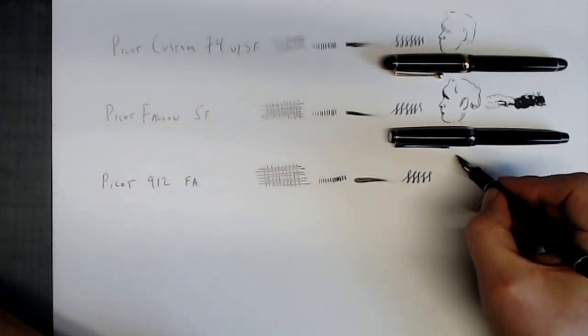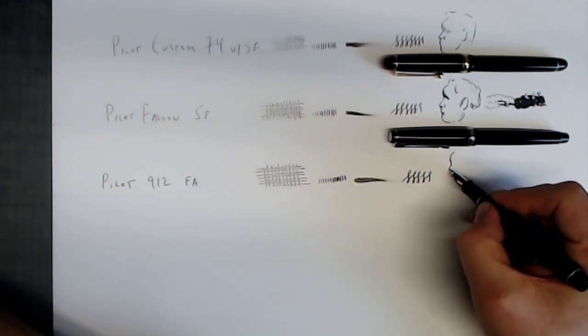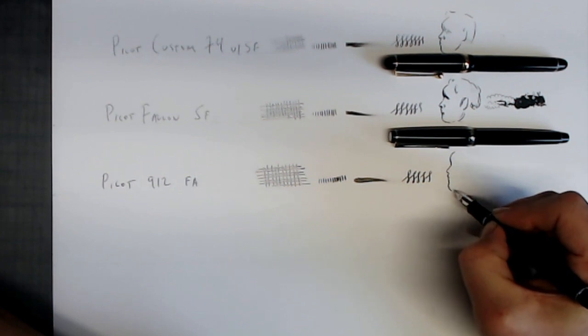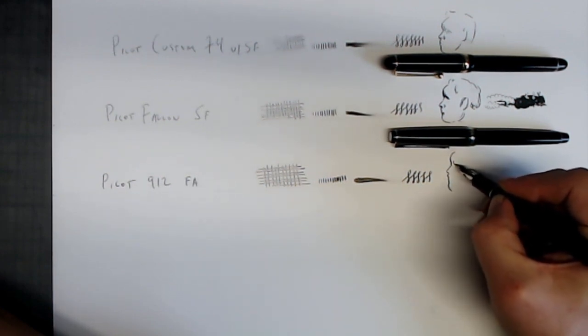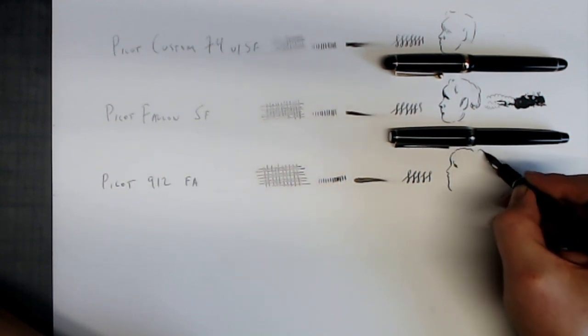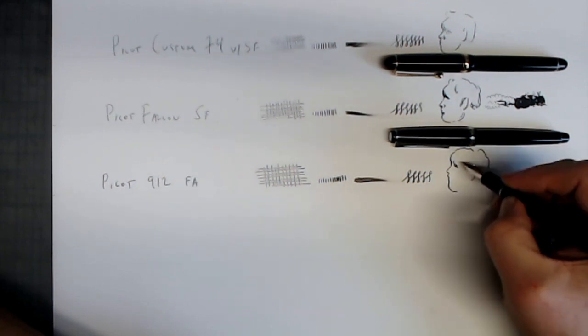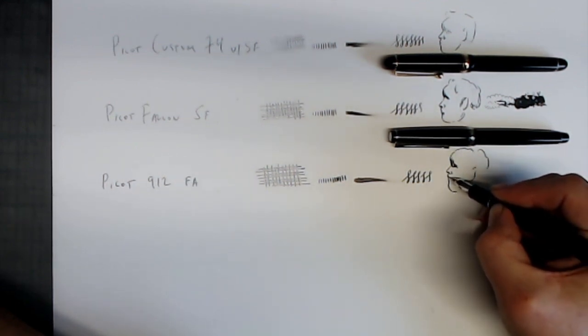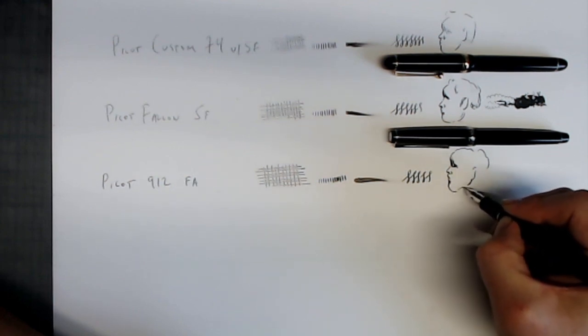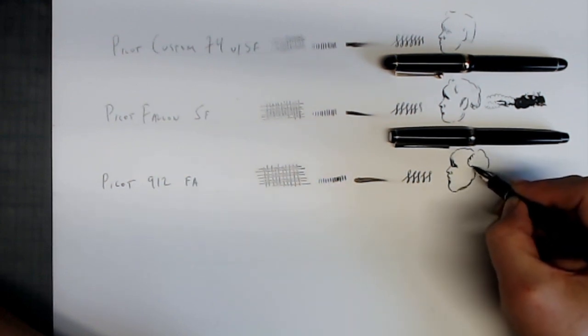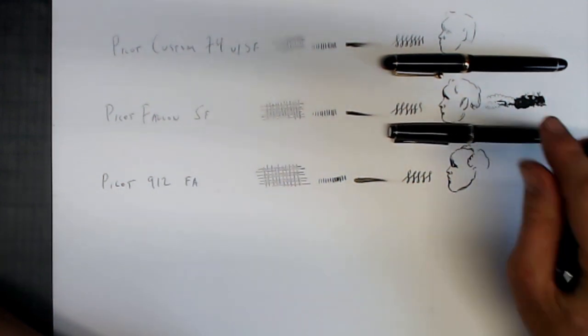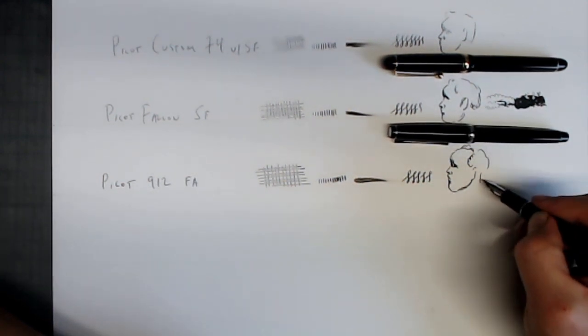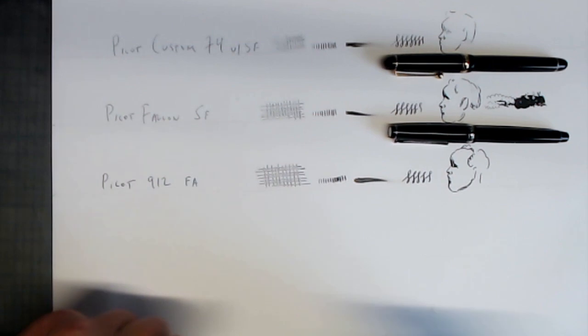Let's do our standard figure eights. Again, very wet. And let's do a little doodle, a little face doodle here. Let's crosshatch a little bit. This pen is very flexy and very, very wet. This guy's balding a little bit, I guess.